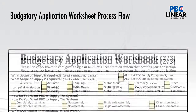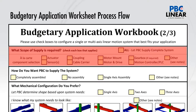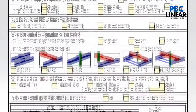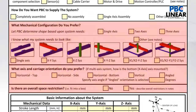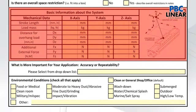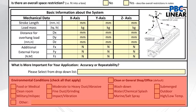For Sheet 2, we ask for details of the application, which includes the scope of supply, the system configuration, system orientation, axis orientation, loading and moment loading, product accuracy and repeatability, and its environmental conditions.